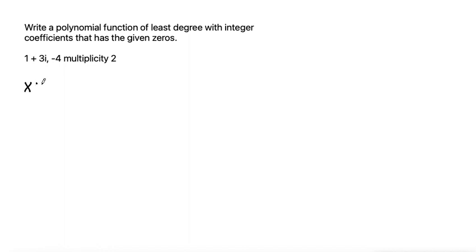That means we have x equals 1 plus 3i. And then we also have negative 4, which is a multiplicity 2. So we have x equals negative 4, but we know that's a multiplicity 2.